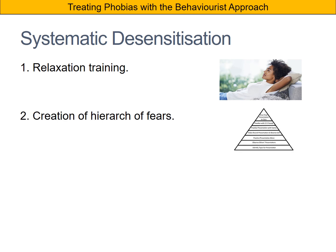Secondly, the individual and the therapist would sit down together and create what's known as a hierarchy of fears. This hierarchy would start with something which causes a little bit of distress — the minimal amount of distress — at the bottom. The individual would then think about all the different situations they could be in, leading up to the most frightening stimulus being at the top of that pyramid.